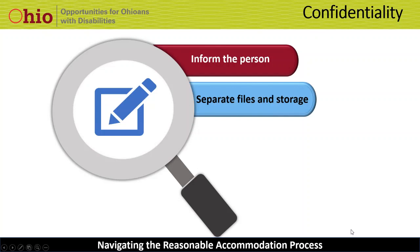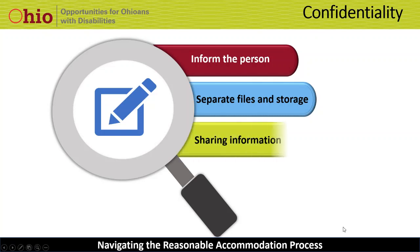There are times certain information is permitted to be shared with designated parties. For example, necessary information may be shared with employees responsible for implementing accommodations, for safety reasons, or during emergency situations. At times it's necessary to share specific information with a supervisor for proper implementation of a reasonable accommodation. However, in these situations, the parties don't need to know about the medical reason for the accommodation — they just need the specific information about the presence of or the use of the reasonable accommodation.